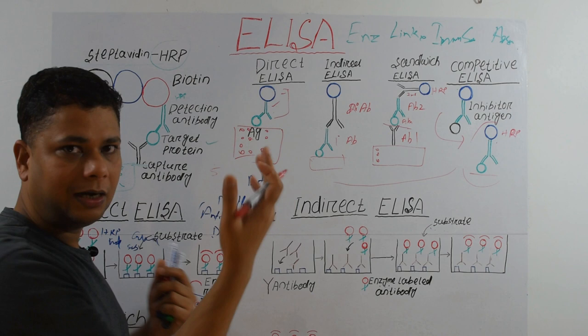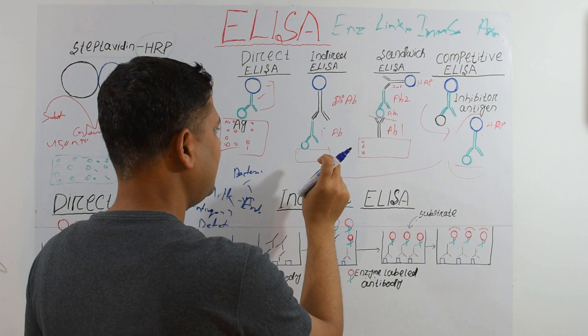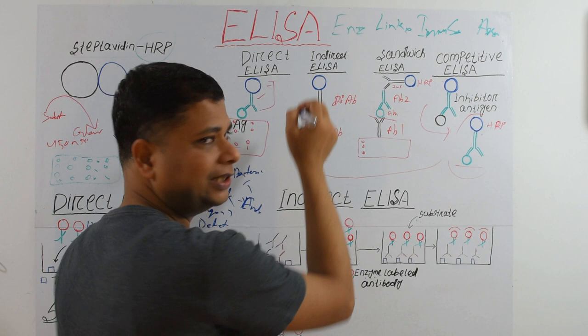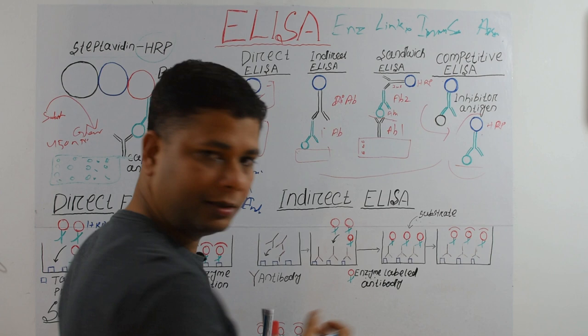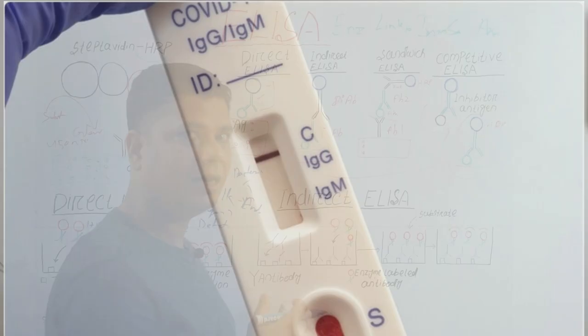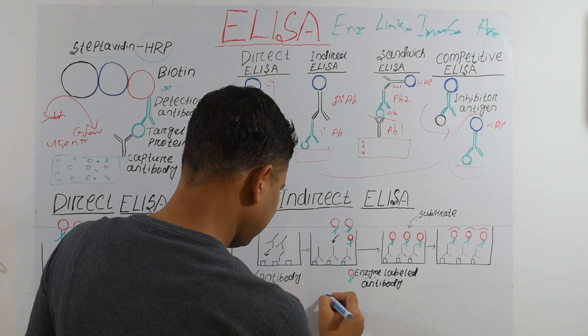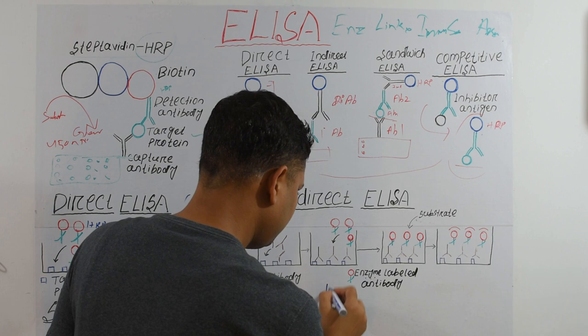Now coming to Indirect ELISA. Here we use two antibodies: the primary antibody binds to the antigen, and then the secondary antibody conjugated with HRP binds to the primary antibody. For example, nowadays we hear about antibody production after vaccination — specifically antibody production against spike protein.